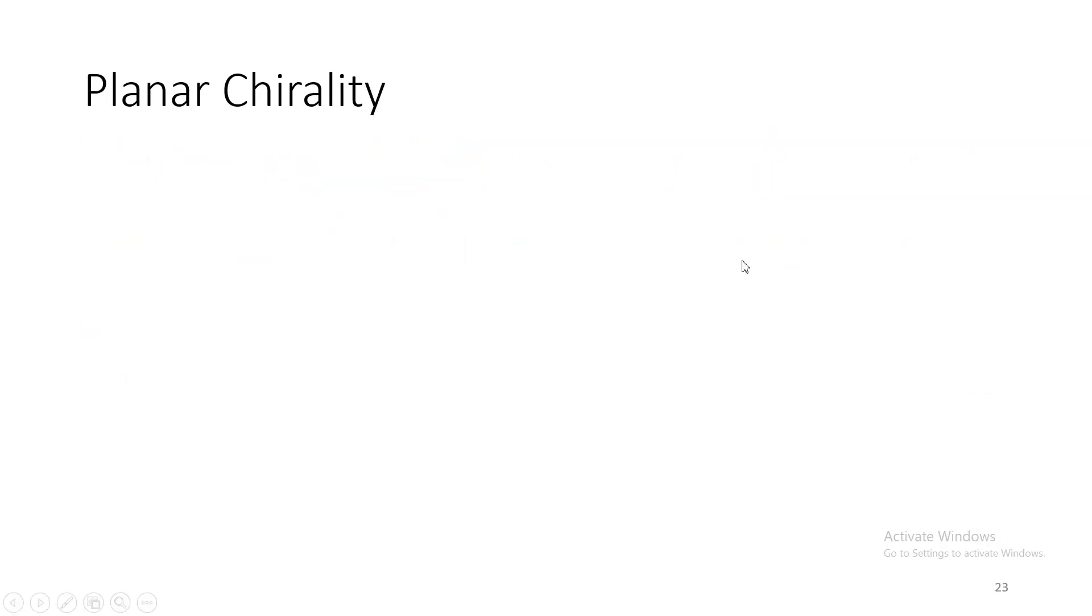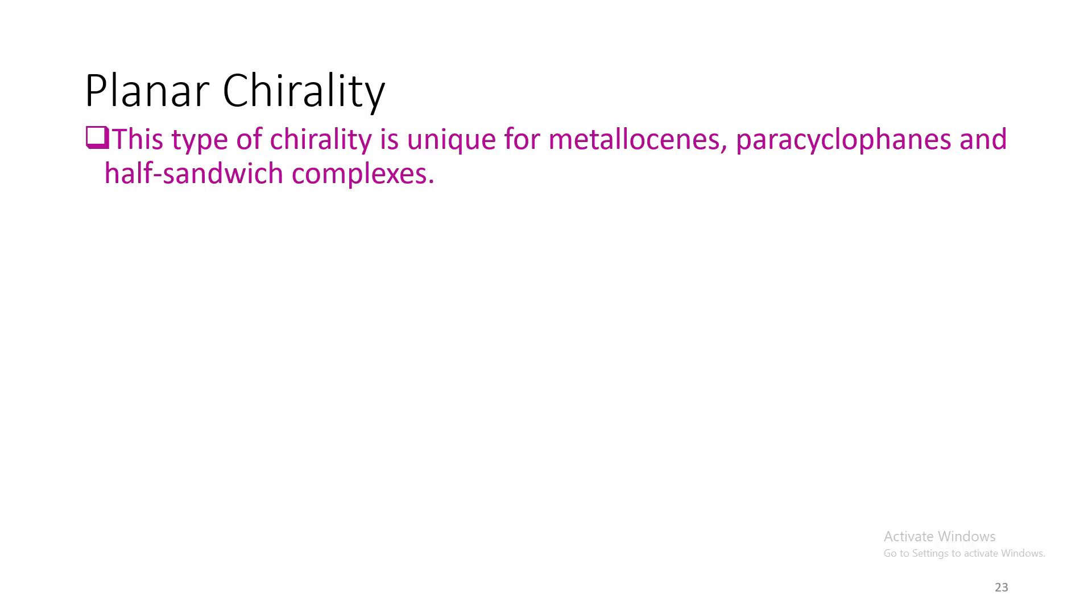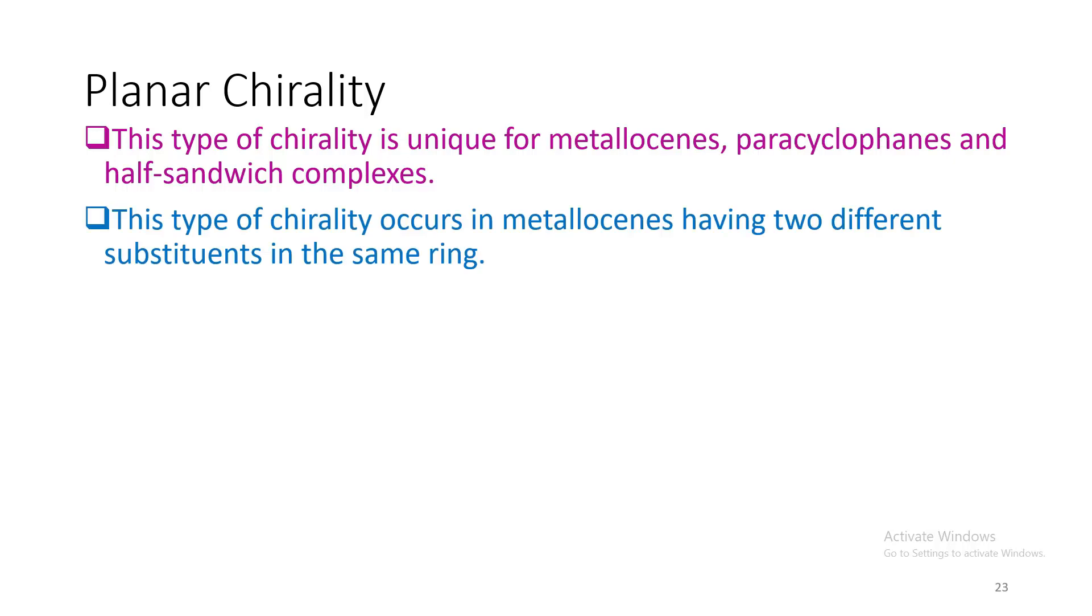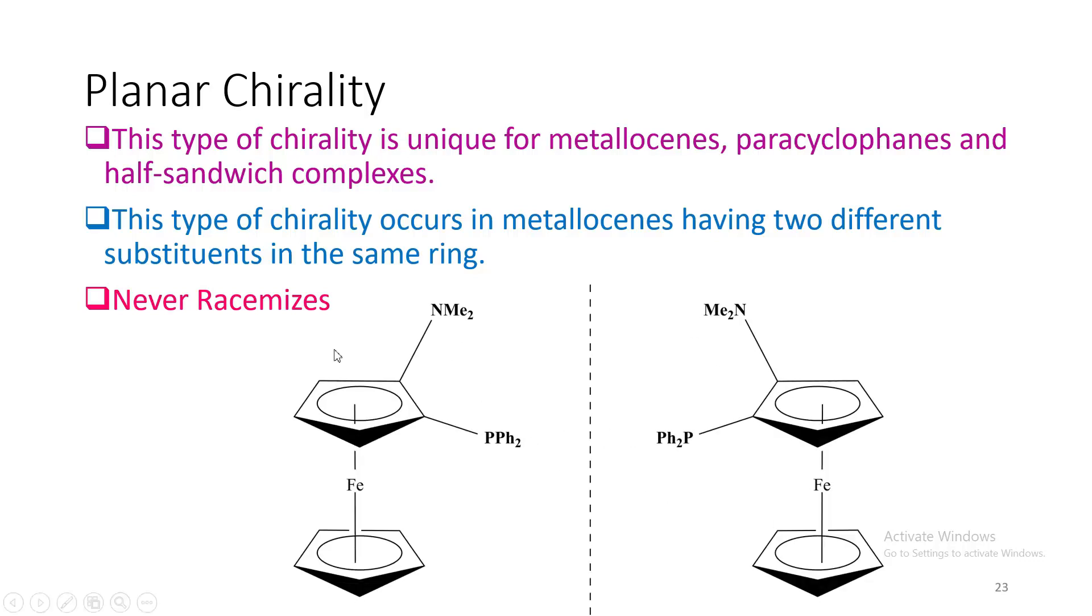Now let us move to planar chirality. Such type of chirality is unique for metallocene, paracyclophane, and half-sandwich complexes. This type of chirality occurs in metallocene having two different substituents in the same ring and they are never achiral. We can clearly see this particular complex which contains a phosphine and amine substituent cannot be superimposed to its mirror image.